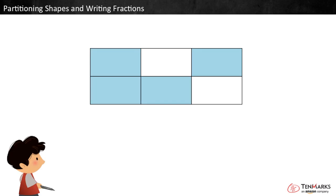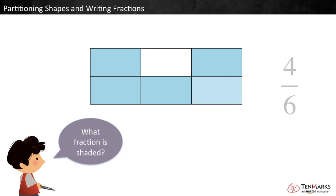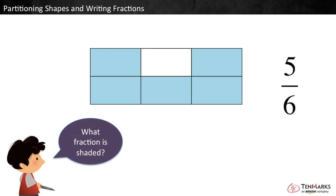Let's look at another shape. In this shape, there are six equal pieces. Four of them are shaded. The fraction 4 sixths represents the shaded pieces because the whole is broken into six equal parts, and four of them are shaded. If we shade one more piece, now what fraction is shaded? 5 sixths is shaded because there are still six equal pieces, but now five of them are shaded.